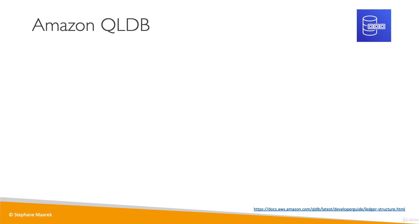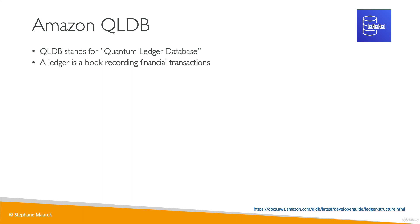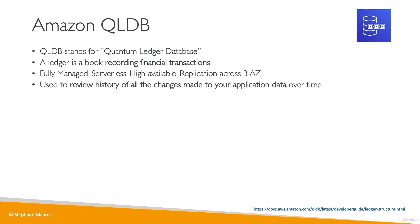Let's talk about Amazon QLDB, which stands for Quantum Ledger Database. A ledger is a book recording financial transactions, and QLDB is designed to maintain a ledger of financial transactions. It's a fully managed, serverless database that is highly available with replication of data across three availability zones. It's used to review the history of all changes made to your application data over time — that's why it's called a ledger.